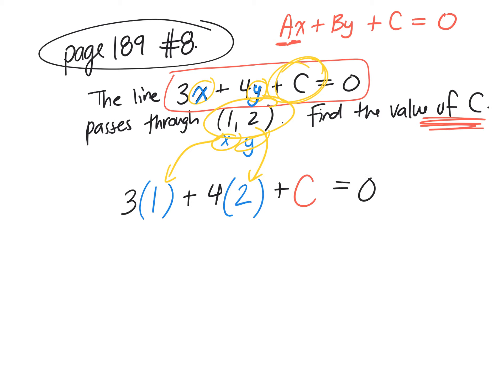Simplify it. What's 3 times 1? What's 4 times 2? Plus C equals 0. Can you add these together? What's 3 plus 8? 11 plus C equals 0. But I need to isolate C. What do I have to do with that positive 11? Negative 11. So C is equal to? Because if I take 11 away, I get rid of it. So I have to take 11 away. So C is equal to negative 11.